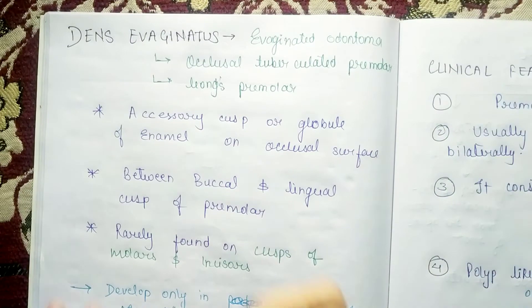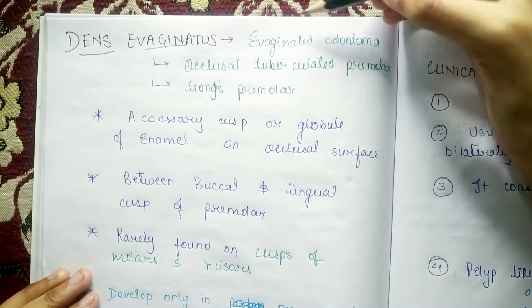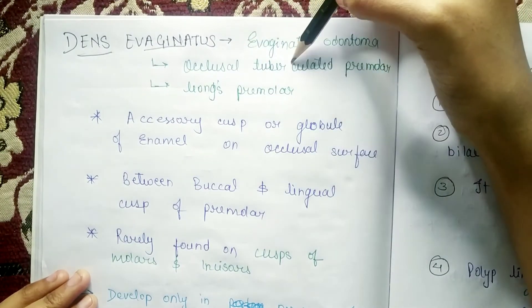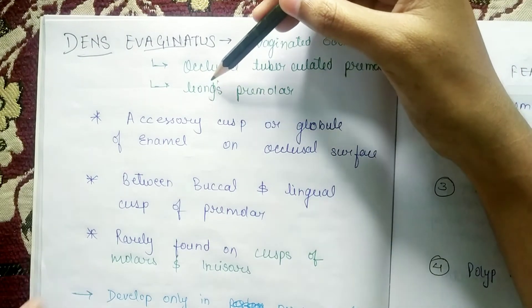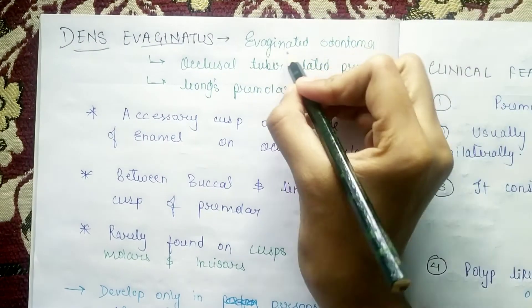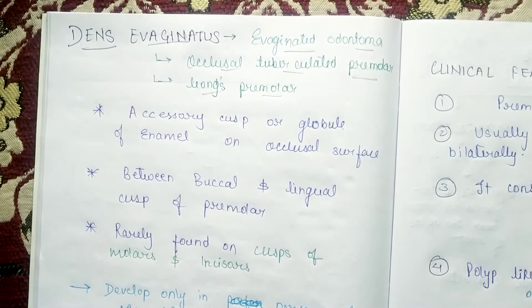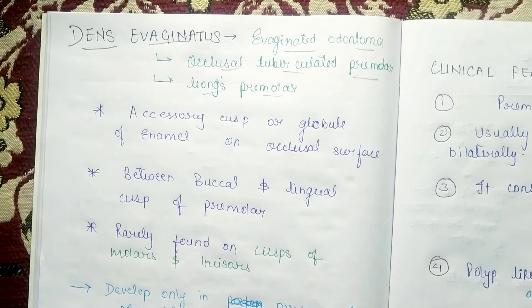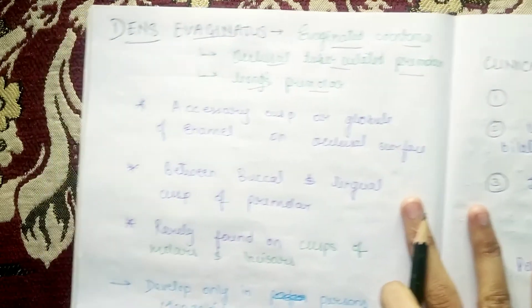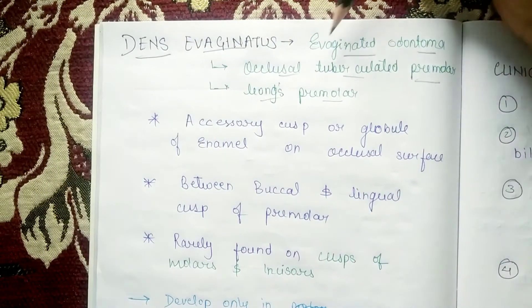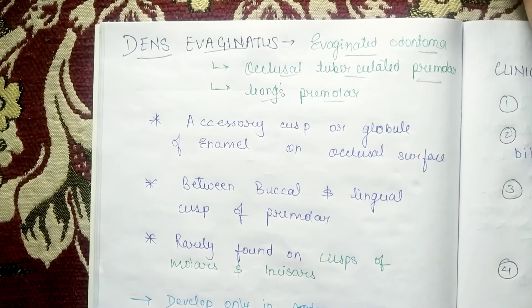Dens Evaginatus is also known as evaginated odontoma, occlusal tuberculated premolar, and Leon's premolar. These alternative names are important because they are frequently asked in viva examinations, so you must know them.